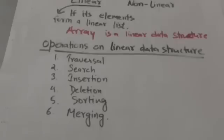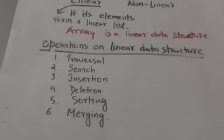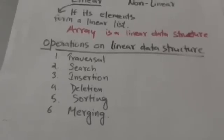First is traversal. Traversal means processing each element in the list. Second is search. Searching means finding the location of an element with a given value. Third is insertion. Insertion means adding a new element in the list.